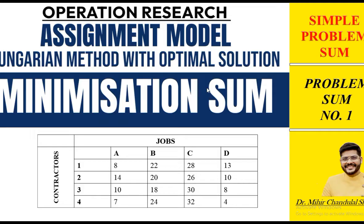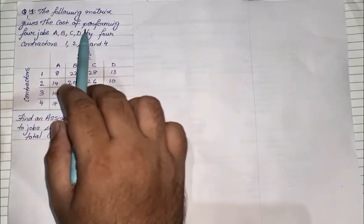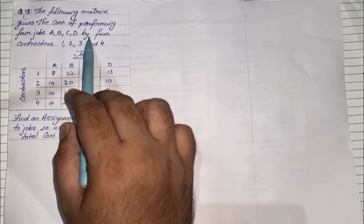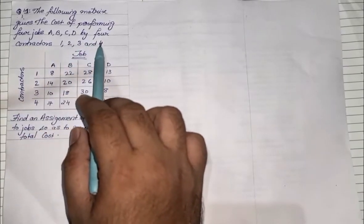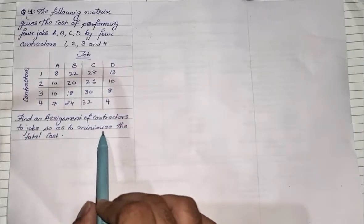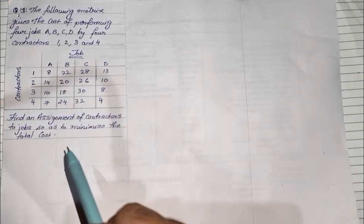There will be around 15 to 20 videos on the Assignment Model covering different types of sums. Now let us see how to solve the sum based on minimization. We are going to take up a very simple problem — Problem Number One. The matrix gives the cost of performing four jobs A, B, C, and D by four contractors named one, two, three, and four. We need to find an assignment of contractors to jobs so as to minimize the total cost.